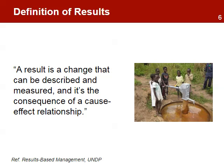This is the definition of results we will use for the rest of our course: a result is a change that can be described and measured, and is the consequence of a cause-effect relationship. The definition emphasizes that for a result to be valid, it needs to be properly described and measured, and that the result is the consequence of the cause-effect relationship of the activities designed to create the desired change. Without a way to measure a change, we will not know if the result has occurred as a consequence of the project interventions.